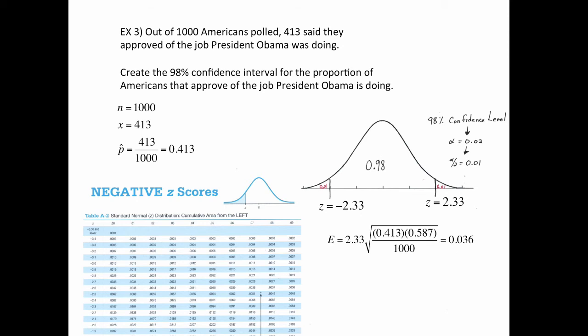The next thing to do is do the error formula. So that's the 2.33, z goes here. This is the p hat, and this is the q hat, 1 minus 0.413. Divide by the sample size and take the square root, so here's the error. So this is essentially saying the approval rating for the president is 41.3%, but it can be off by plus or minus 3.6%. So that's the next part we do. Add the error on one side, the right side, subtract the error on the left side, and there's the confidence interval.